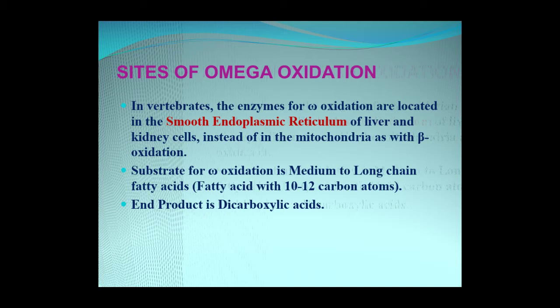The site of omega oxidation: in vertebrates, the enzymes for omega oxidation are located in the smooth endoplasmic reticulum of liver and kidney cells, instead of mitochondria as in beta oxidation. The substrate for omega oxidation is medium to long chain fatty acids, that is fatty acids which possess about 10 to 12 carbon atoms. The end product of omega oxidation is dicarboxylic acids.